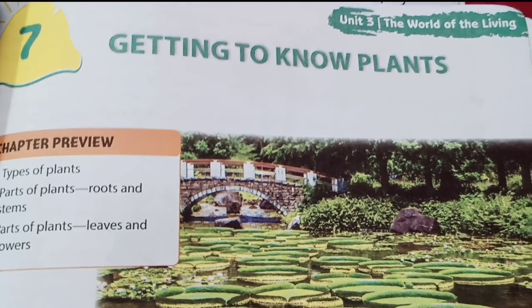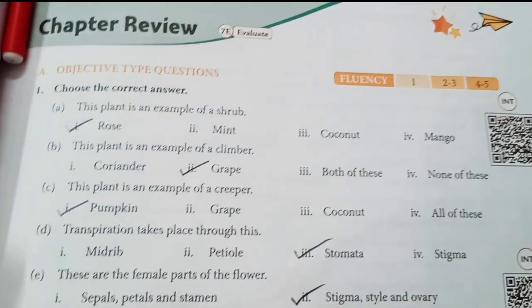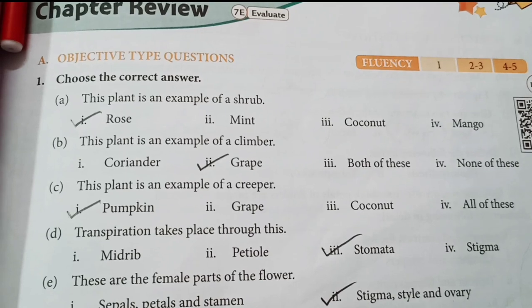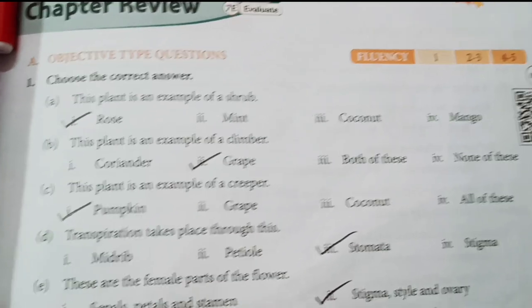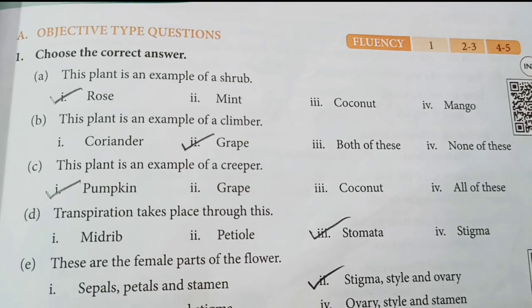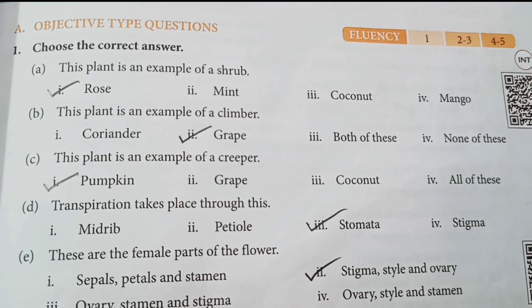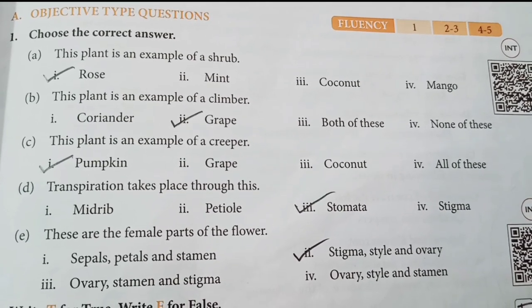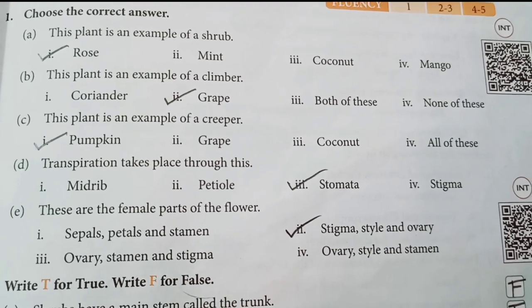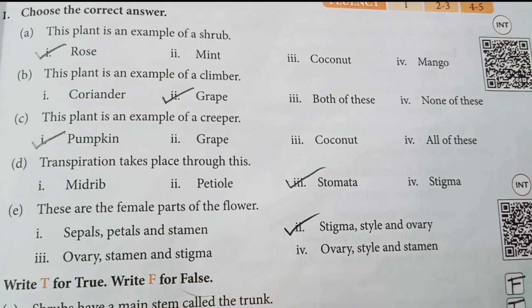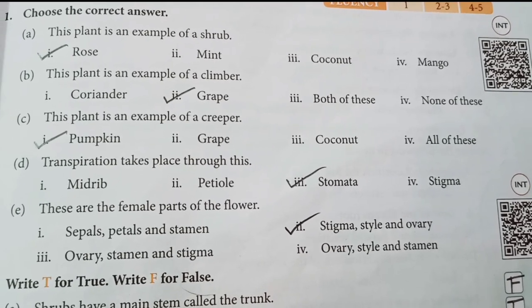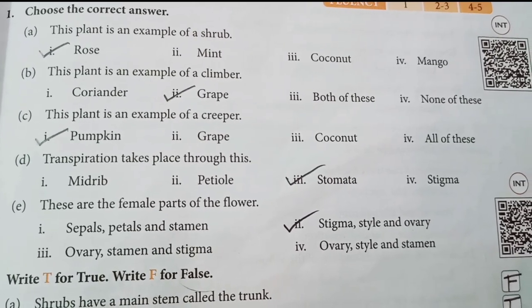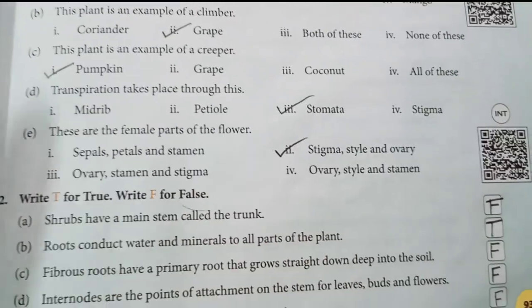Let's start Class 6 West Bengal Board Chapter 7: Getting to Know the Plant. First we have the objective parts from Exercise A. Number one: Choose the correct answer. (a) This plant is an example of a shrub — answer is rose. (b) This plant is an example of a climber — answer is twig. (c) This plant is an example of a creeper — answer is pumpkin. (d) Transpiration takes place through — answer is stomata. (e) These are the female parts of the flower — answer is stigma, style and ovary.